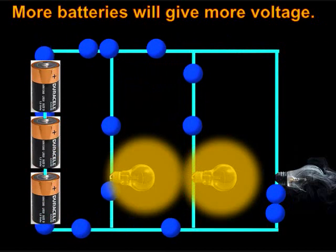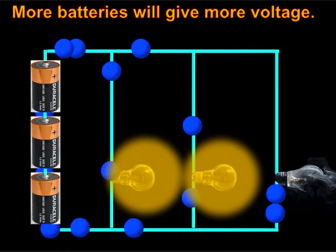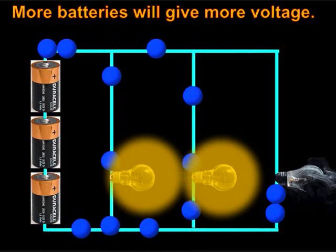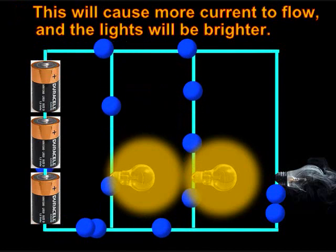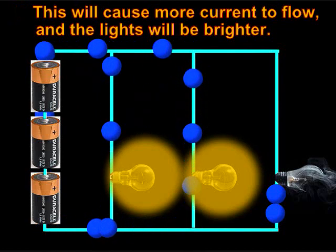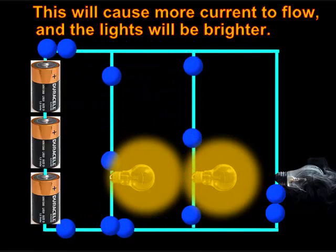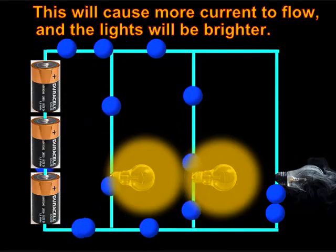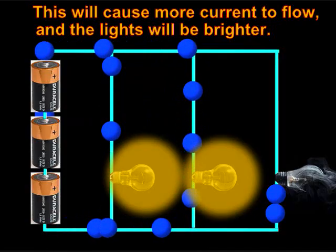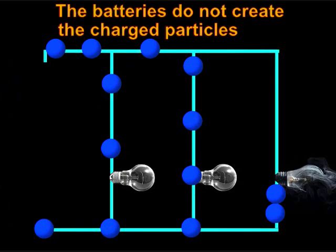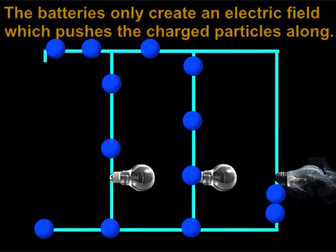More batteries will give more voltage. This will cause more current to flow, and the lights will be brighter. The batteries do not create the charged particles — the batteries only create an electric field which pushes the charged particles along.